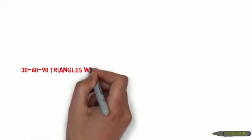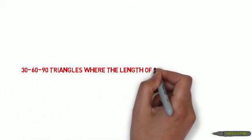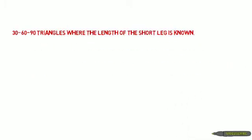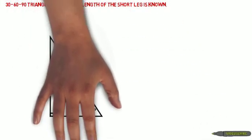In this video, we're going to take a look at 30-60-90 triangles, specifically where the length of the short leg is known. This is the most standard way to look at them, the easiest way.